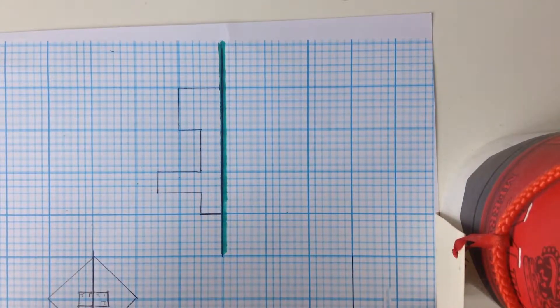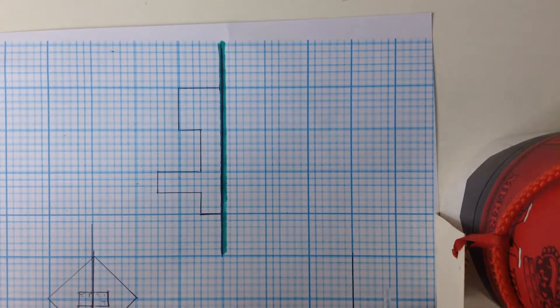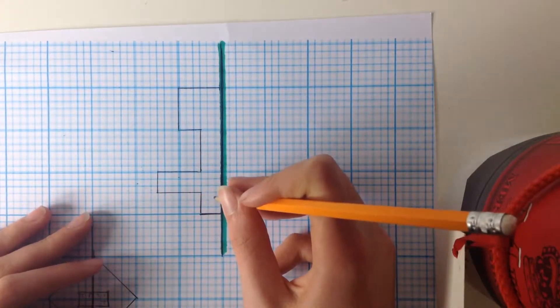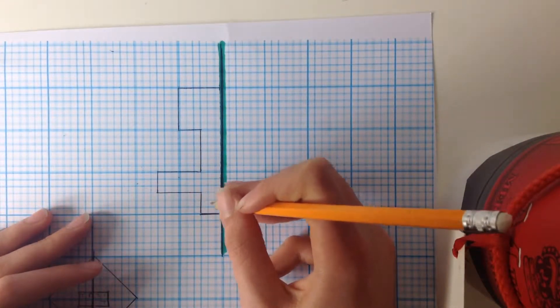But, the paper I'm using does have squares on it, so I'm going to use those. Let's start at this side. You see here, it's three of those little squares out.